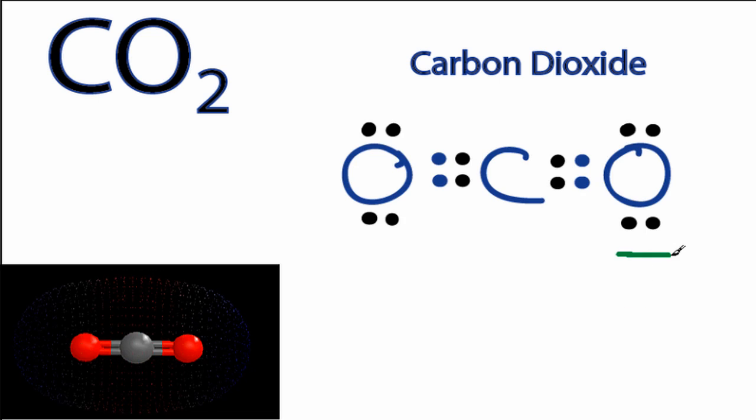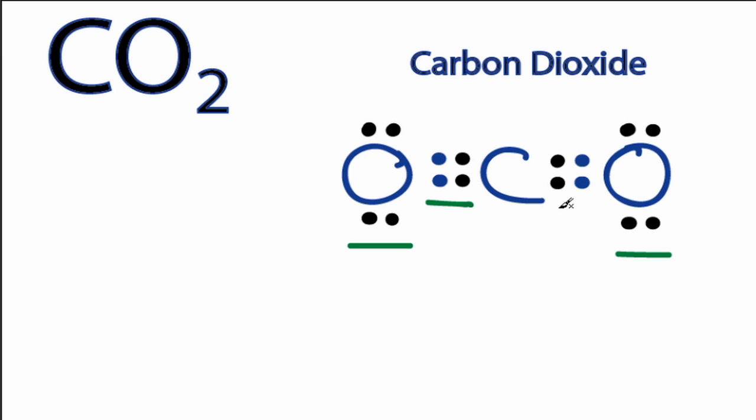Right away we can see we have two oxygens that are bonded to carbon, central carbon with double bonds, and that there's nothing else attached to that carbon, no other atoms or lone pair electrons.